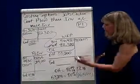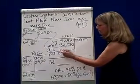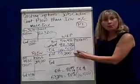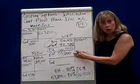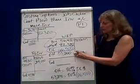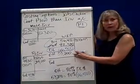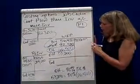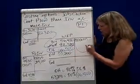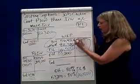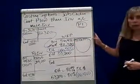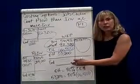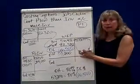So labor is $66,500. And overhead — because we're under normal costing — applied overhead is 80% of that, or $53,200. We don't know what cost of goods manufactured is — in other words, what came out of the work in process account — and we don't know what ending inventory is, so we're a little stymied here.